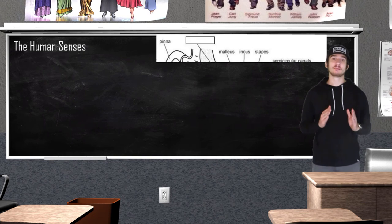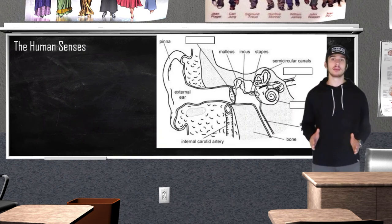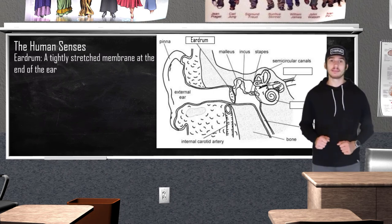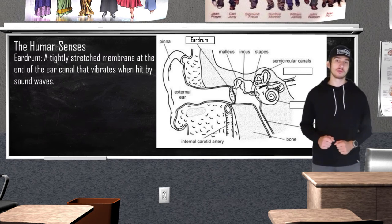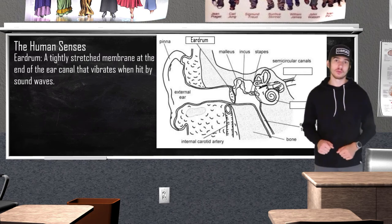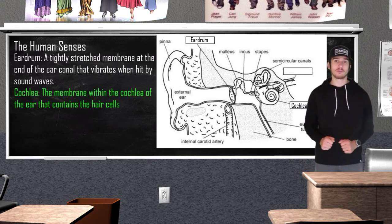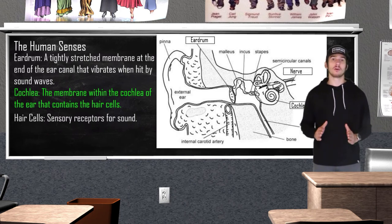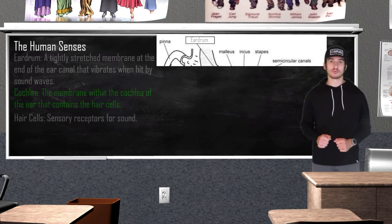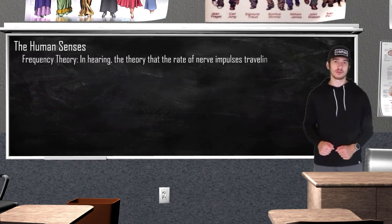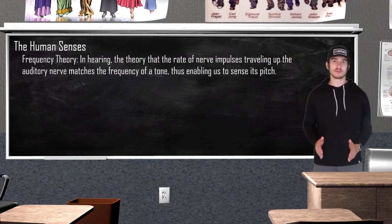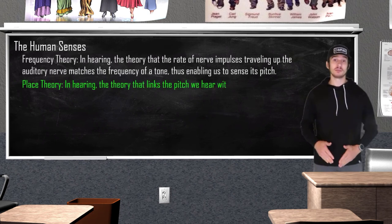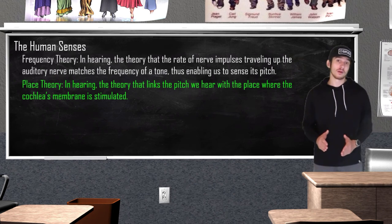Now onto hearing. Sound waves are collected by the outer ear, amplified by the middle ear, and transduced in the inner ear. The outer ear includes the eardrum — a tightly stretched membrane at the end of the ear canal that vibrates when hit by sound waves — separating the outer ear from the middle ear. The middle ear amplifies sound waves, which then travel through the oval window into the inner ear structure called the cochlea. The cochlea contains the basilar membrane, where our sensory receptors for hearing, called hair cells, are located. Transduction occurs as sensory neurons take auditory information to the thalamus, which redirects it to the temporal lobe. The frequency theory states that the rate of nerve impulse traveling along the auditory nerve matches the frequency of tone, allowing us to distinguish pitch, while place theory says we perceive pitch because the brain picks up on the area of the basilar membrane receiving neural messages.